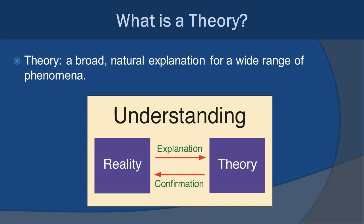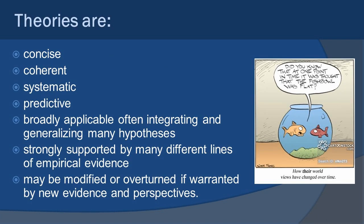Now let's get into the concept of a theory. A theory is a broad natural explanation for a wide range of phenomena. They generally develop over a long period of time, and help us understand major concepts within biology, physics, chemistry, you name it. They have predictive power that allows us to confirm by observing what happens in reality. Now there's much more to theories than that simple definition. Theories are concise. They're coherent. They make sense. They're systematic. They are predictive. They generally integrate multiple hypotheses and are supported by many different lines of empirical evidence.